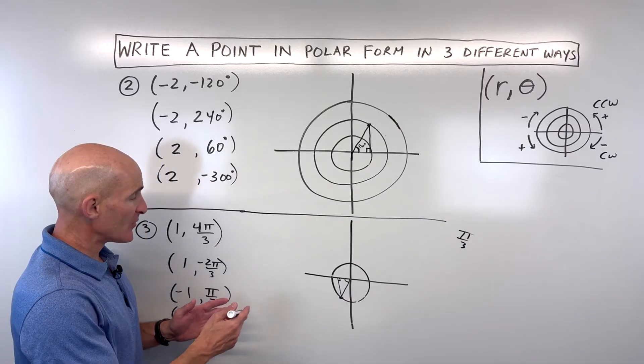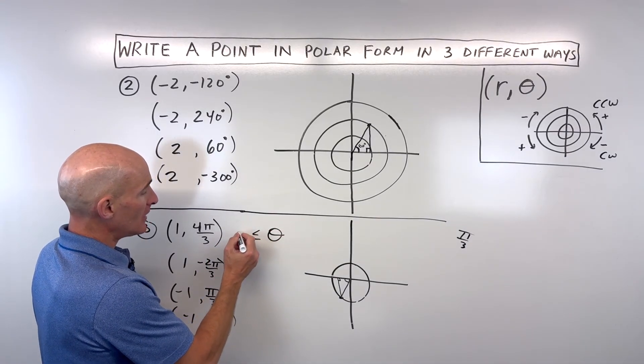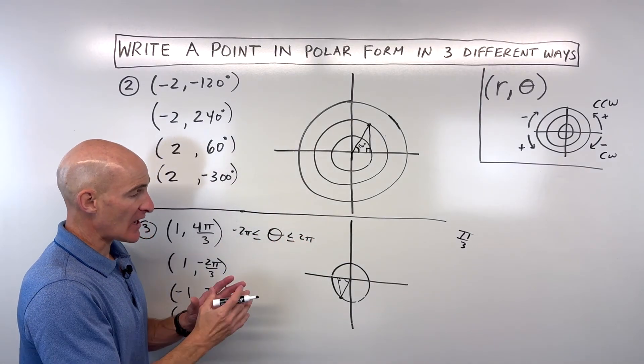And you've got some different representations. Sometimes the notation will say where theta is between negative two pi and positive two pi, so they kind of restrict you.